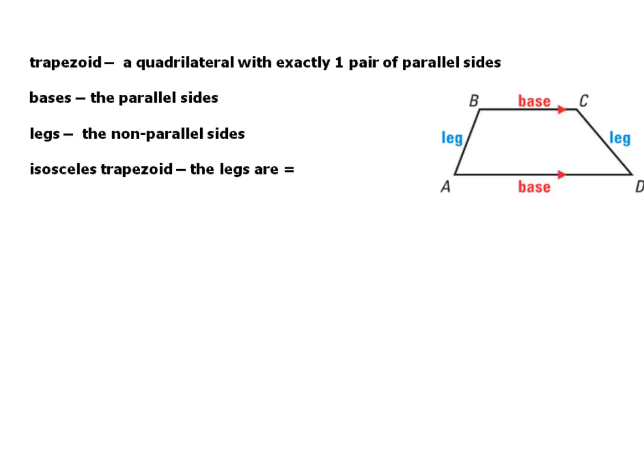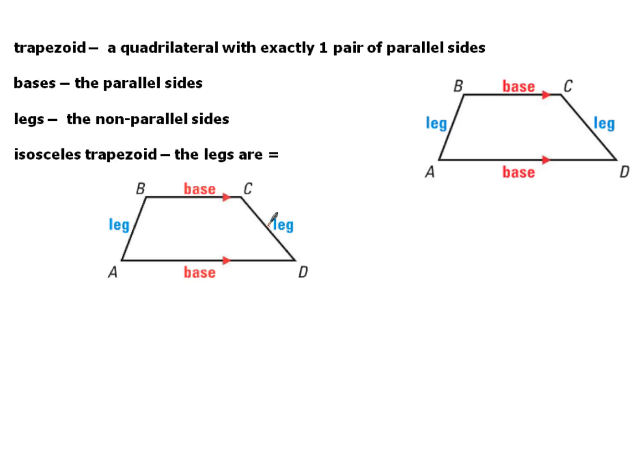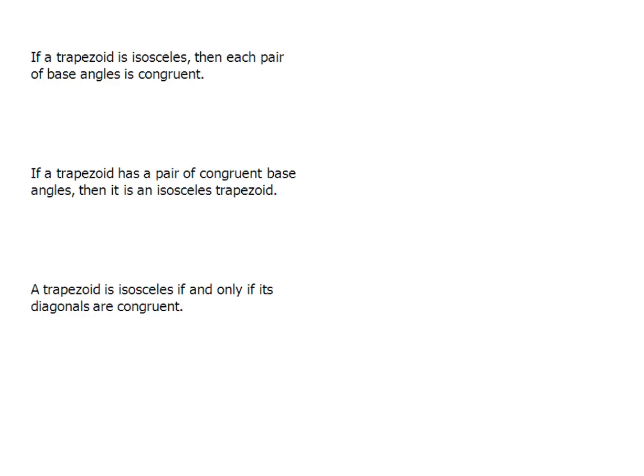The isosceles trapezoid is a very special trapezoid where the legs are equal. So in the isosceles trapezoid, that just means this part and this part, the legs would be marked as being equal. Now, there are three different characteristics we'll talk about with the isosceles trapezoid. It says if a trapezoid is isosceles, then each pair of base angles is congruent. So that gives you this kind of picture. Make sure that you mark both pairs of base angles being congruent as well as the legs being congruent.